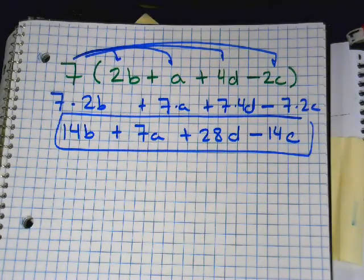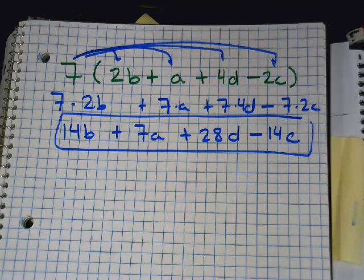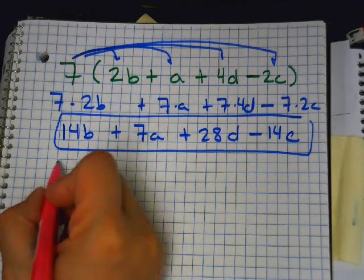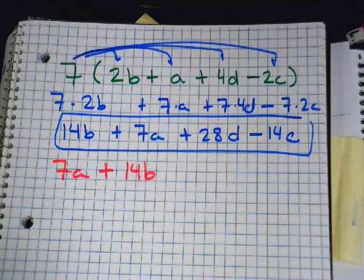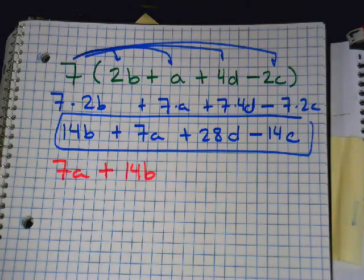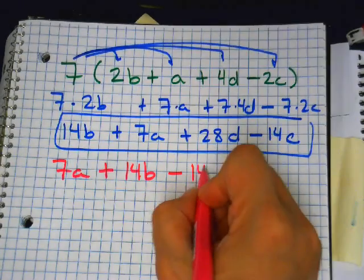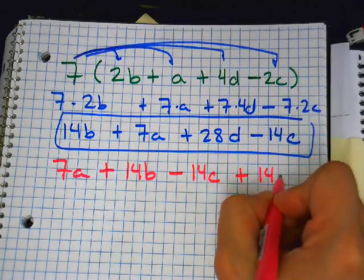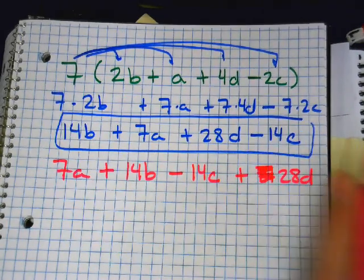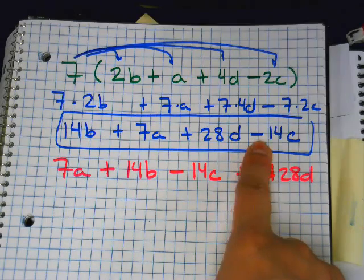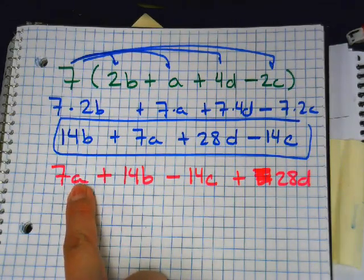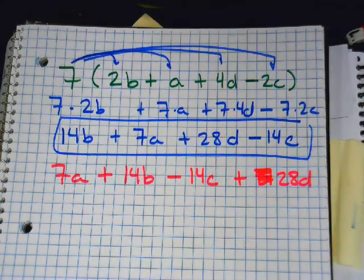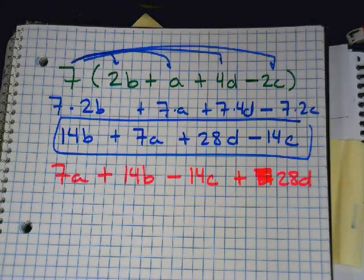Would it be your answer in algebra? No, in algebra would be in alphabetical order. So which one would I put first? 7A, 14B, 14C, 28D. But wait, what's special about 14C? Minus. You would have to carry that minus with the 14C. So minus belongs to the 14C, so you would put it there. So in alphabetical order: A, B, C, D. In high school, that's how they want you to write it, in alphabetical order. And then they do something with the exponent as well, but we'll leave that to the high school teachers.